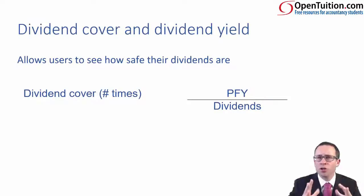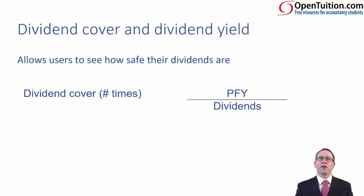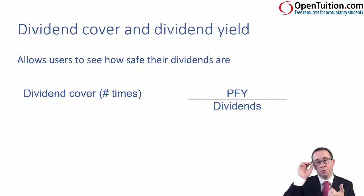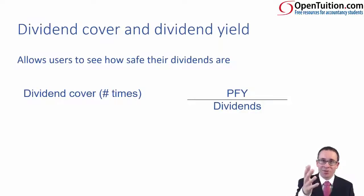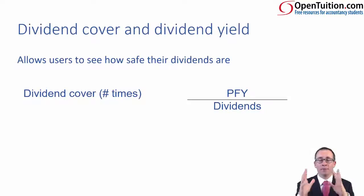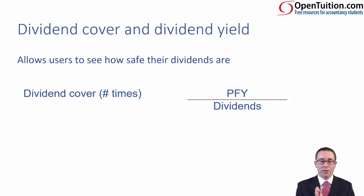The higher the dividend cover figure, the safer your dividends are. Just be careful, however — in order to pay a dividend you need distributable profits, so you would need to check in the real world that there are sufficient distributable profits. And most importantly, you will need to check that you have cash. Remember, profit does not necessarily equal cash. So even though you have a nice big dividend cover, maybe you don't have sufficient cash to actually pay it.